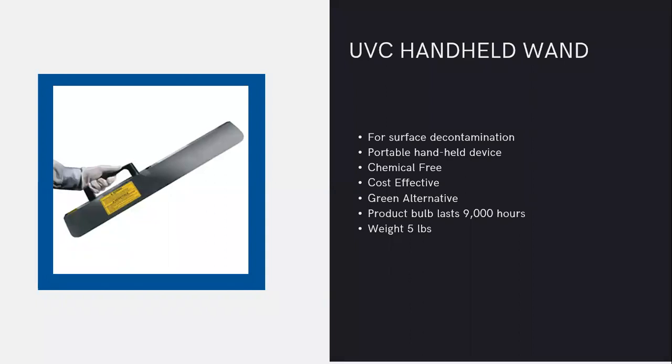Let's talk about the different ways we can use UVC and how you can be more flexible. We have fixed mounted systems, but this is a great example of the handheld wand — the tool we recommend when you need on-demand decontamination. It requires electricity via a simple regular electrical plug. It's portable, easy to use, chemical free, and does not create ozone. None of the products we're recommending create ozone. It's cost effective, the green alternative, and it weighs less than five pounds. The bulb lasts for one year or 9,000 hours, just like the other systems we're talking about.